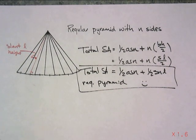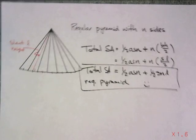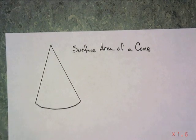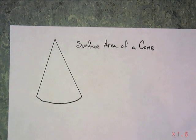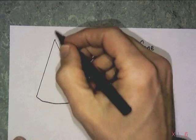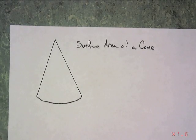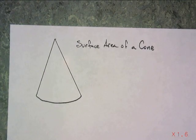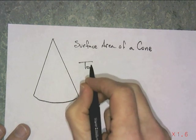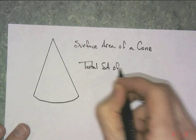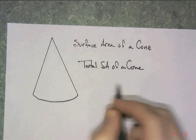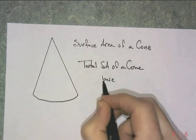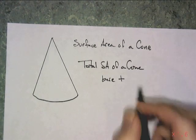Taking that, I want to now talk about making a cone. A cone, it looks a lot like a pyramid. It looks like a pyramid with a lot of sides. I could imagine having 4,000 little triangles on there. Or maybe it's got a million triangles and you can't tell, and it just all looks very smooth. So the total surface area of a cone is just like the pyramid.